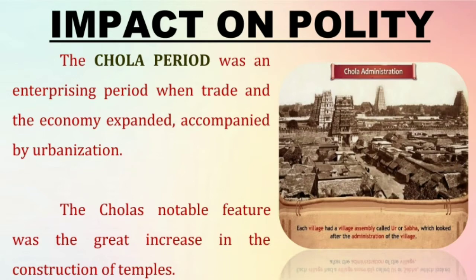The administration was headed by the king. The Chola kingship was hereditary in nature. The whole empire had been divided into provinces called mandalams. Each mandalam was divided into a number of kothams or walanadus, which were further subdivided into nadus. Each nadu was further subdivided into villages or oors.